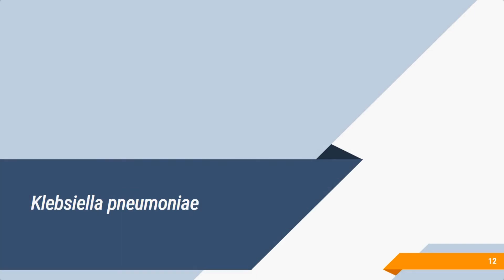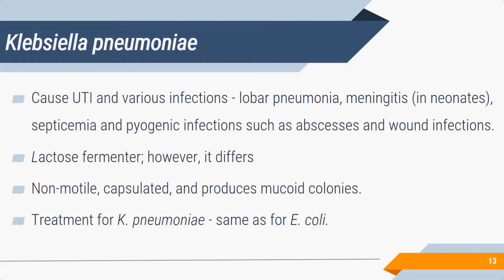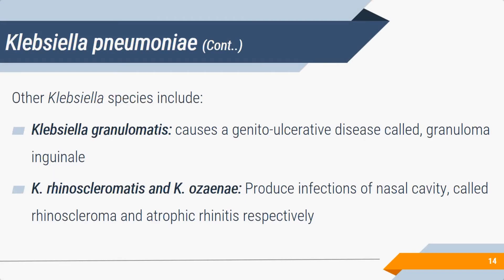The second important enterobacterium is Klebsiella pneumoniae. It causes UTI, pneumonia, meningitis, septicemia, and pyogenic infections — essentially all infections E. coli causes except diarrhea. It is non-motile, capsulated, and produces mucoid colonies. Other Klebsiella species include K. granulomatis, causing the ulcerative STD granuloma inguinale; K. rhinoscleromatis, causing rhinoscleroma — a potato-like nasal tumor; and K. ozaenae, causing atrophic rhinitis with loss of smell.